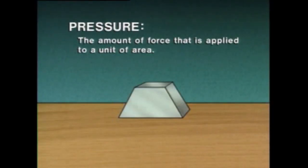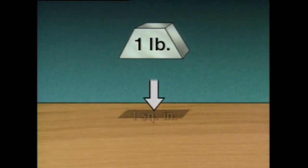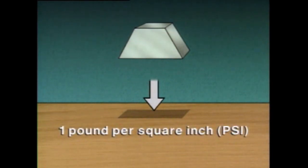Pressure measurements are widely used in process operations, but the way the measurements are made and the way they're expressed can vary according to the process or material involved. For that reason, you need to understand what pressure is and be familiar with the scales commonly associated with pressure measurement. Simply put, pressure is the amount of force that's applied to a unit of area. For example, the pressure exerted by a solid object is its weight applied over the surface area that it's resting on. If the object weighs one pound and the surface area is one square inch, then the pressure exerted by the object is one pound per square inch, or one psi.